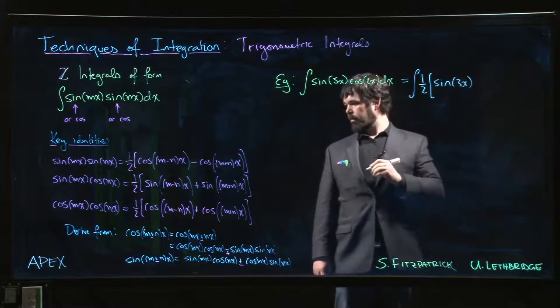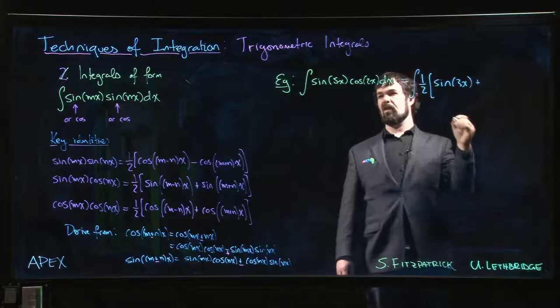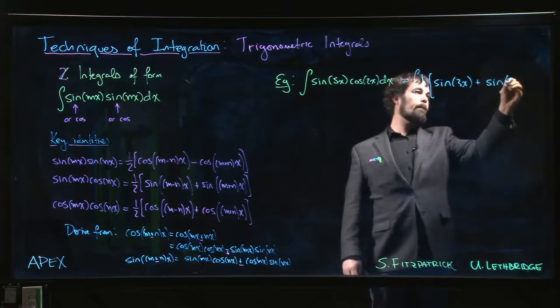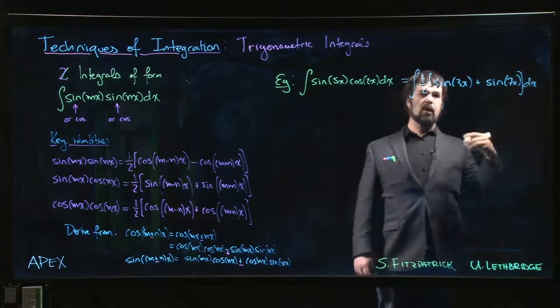Plus, and now we do m plus n, so 5 plus 2 we get sine 7x.